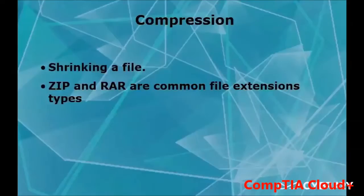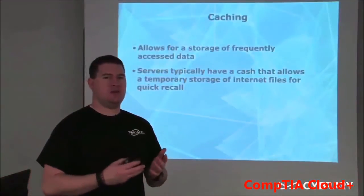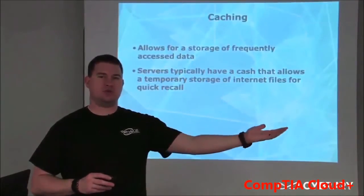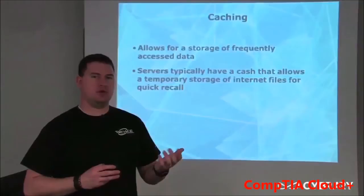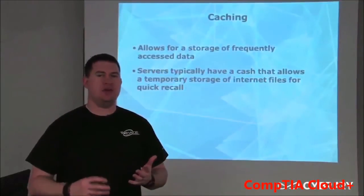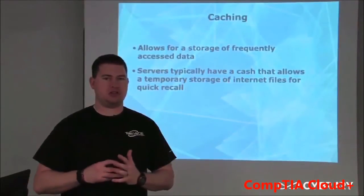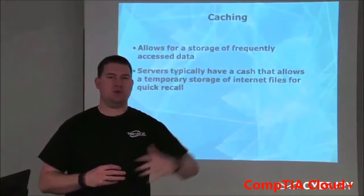Caching allows for storage of frequently accessed data. The purpose behind caching is so that your computer doesn't have to go to the internet every time it needs information. For example, when you type in www.google.com, it goes to the internet and pulls Google's page. What caching does is save that page locally so that whenever you type google.com again it goes to your local computer instead. That way, if many people are going to Google, they can pull the cache from a local server without going out to the internet.